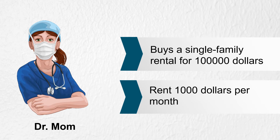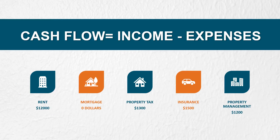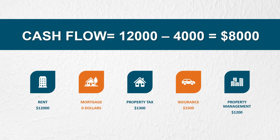Let's say Dr. Mom buys a single-family home for renting, paying $100,000 in cash. The rent for the home is $1,000 per month. The total cash flow per year is the difference between income and expenses. The income in this case is the rent paid, which is $12,000 per year. Since she paid for the property in cash, she does not have any mortgage expenses. She'll spend about $4,000 on property tax, insurance, and property management. Her total cash flow in year one is $8,000, which is $12,000 minus $4,000.